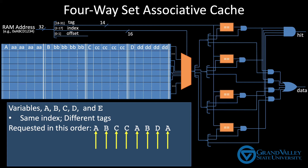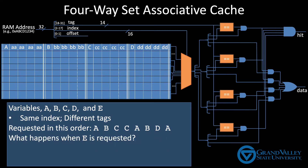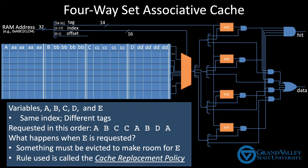Then A is a cache hit. But what happens when we request E for the first time? One of the variables on this cache line has to be evicted to make room for E. The algorithm we use to choose which one to evict is called the cache replacement policy.